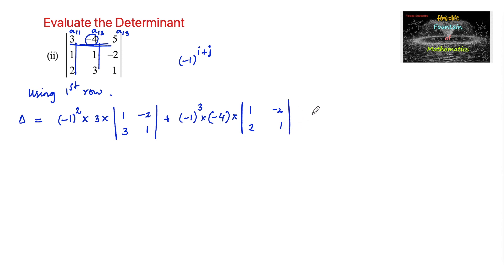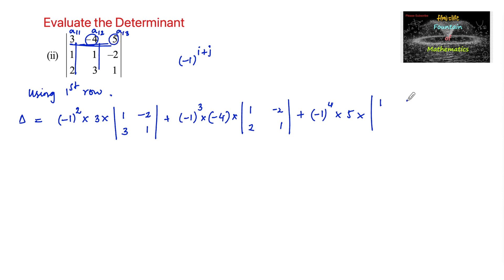For the third term: (-1)^(1+3) × 5 × det of sub-matrix [1, 1; 2, 3]. Now let us simplify. (-1) to an even power equals +1, and (-1) to an odd power equals -1.